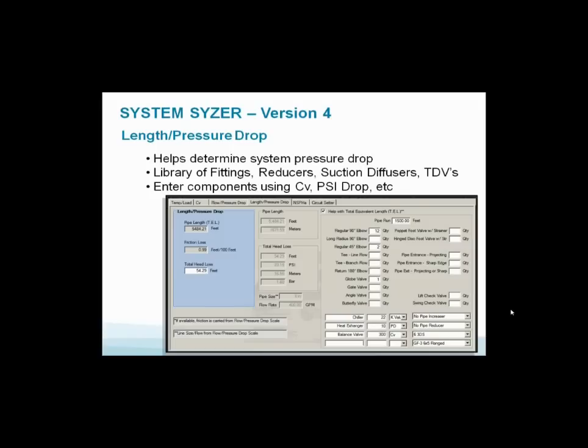Here's how we do this. I come in here and I fill in how many elbows do I have, how many T's, how many gate valves, butterfly valves, what's the length of my pipe actual runs, do I have a check valve, a triple duty valve, a chiller? All this is built into this table. You can plug in each one of those numbers, and you'll wind up left-hand side with total head loss required for your pump.